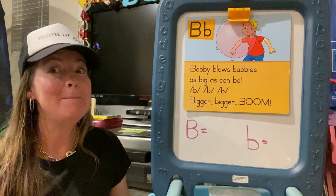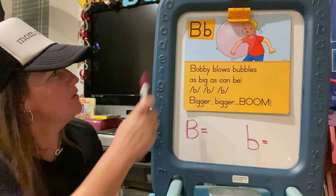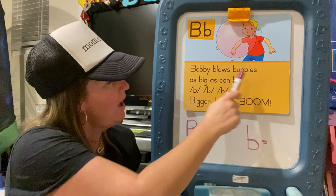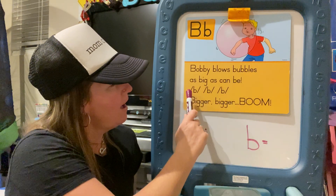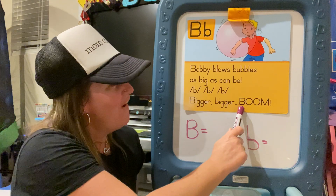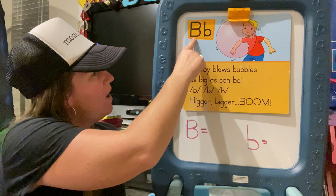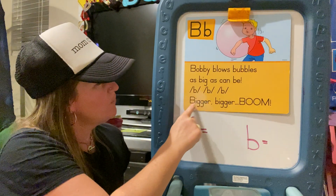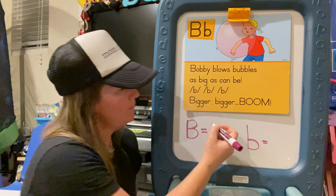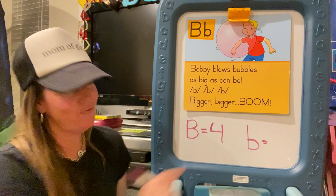Let's count the big Bs first. Here we go — please count with me. One, two, three, four. How many? Show me. Four big Bs — one, two, three, four. So you can take your magic air finger and practice the four just like that. Big B — we have four.